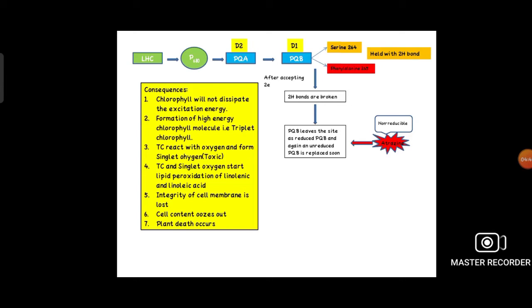If there is dissipation of energy, the chlorophyll will form singlet chlorophyll which is not toxic. But triplet chlorophyll molecule is toxic. This triplet chlorophyll molecule will react with oxygen and form superoxide or singlet oxygen, which is more toxic. This triplet chlorophyll and singlet oxygen start lipid peroxidation of linoleic acid and linolenic acid.